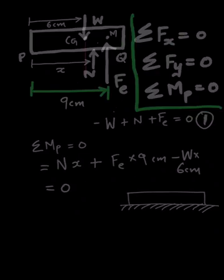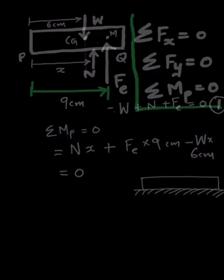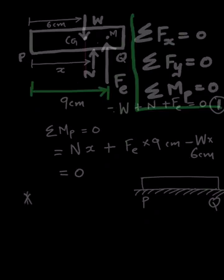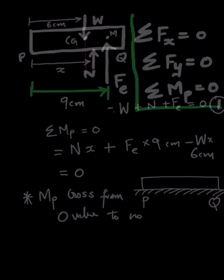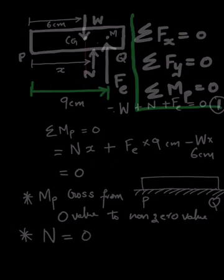What they are asking us to find is the particular value of omega at which the mobile will actually lift off the ground about point q. Two key points: first, at the instant of lifting off, the moment about p will cross from zero to a non-zero value. Second, at that moment the normal force N will be zero, because the mobile is getting lifted off the ground and is no longer in contact with it.